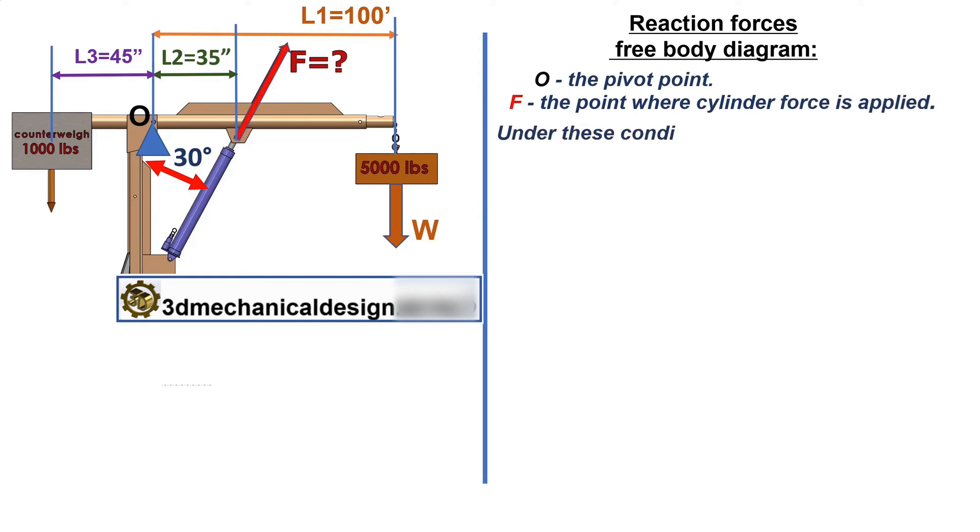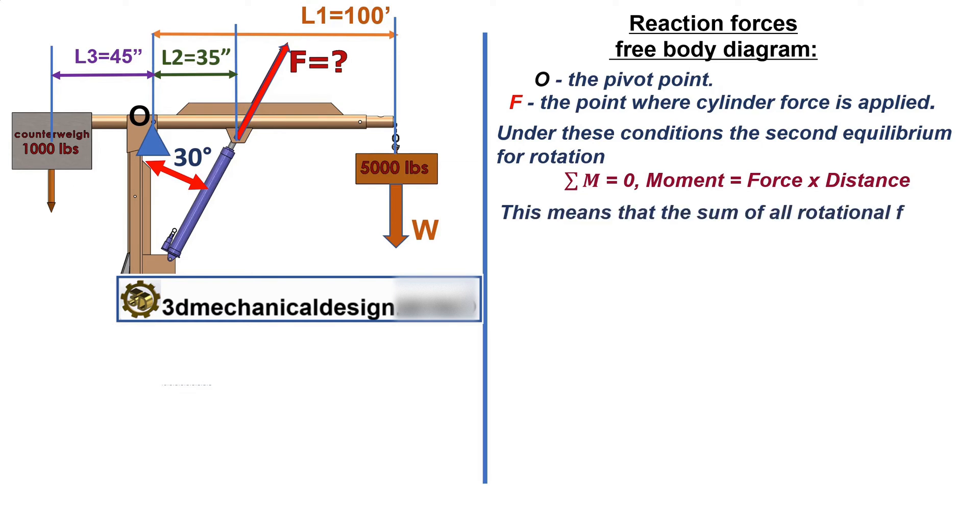Under these conditions, the second equilibrium for rotation, the sum of the moments is 0. Moment equals force times distance. This means that the sum of all rotational forces on the crane arm is zero.